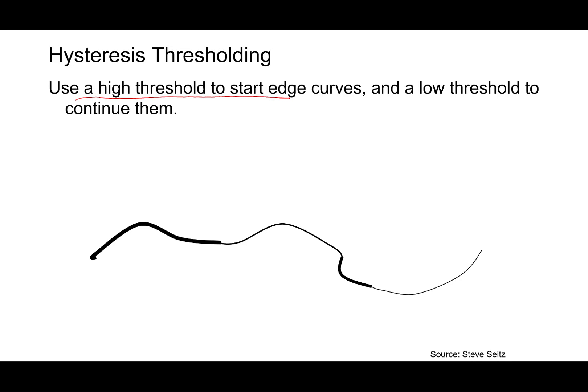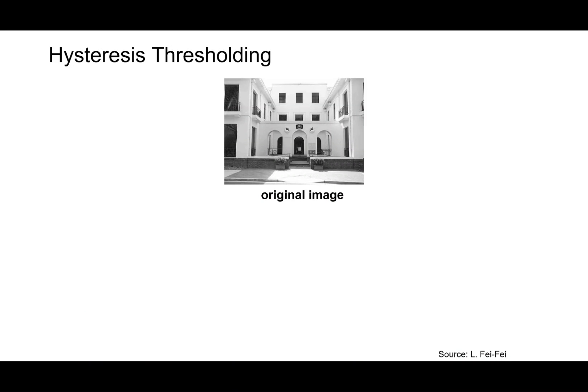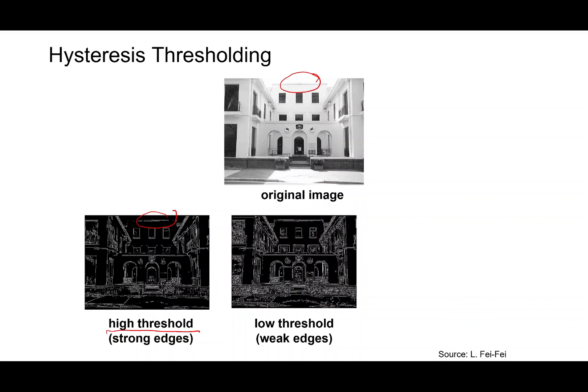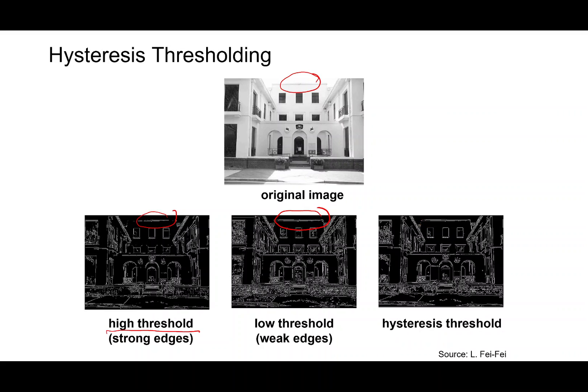Use a high threshold to start the edge curves like these. And these are the strong edges and use a low threshold to continue them in this fashion. We look at some pictures of these high threshold and low threshold edges. These are high thresholds, strong edges. You can see for example here, there are strong edges corresponding to this. And then there are these low threshold edges, so many of them. You start the edges with high threshold edges and use the low threshold edges to continue them so that you get a nice edge detection.